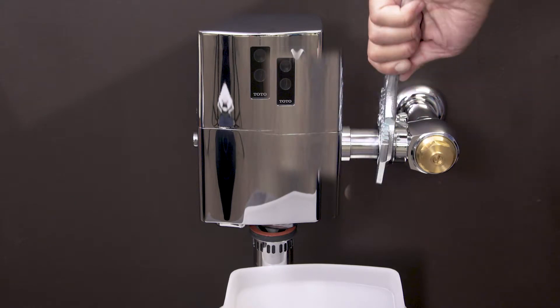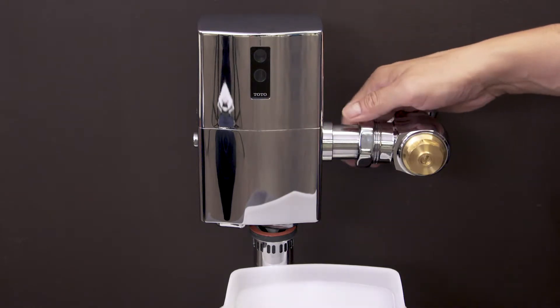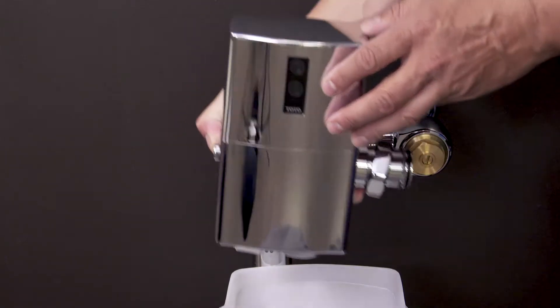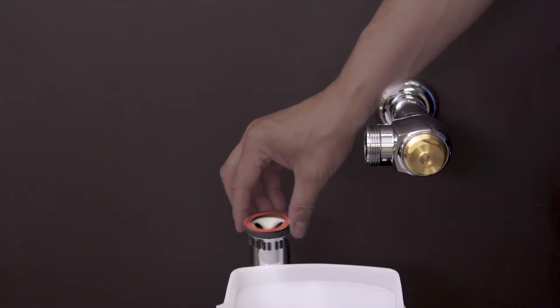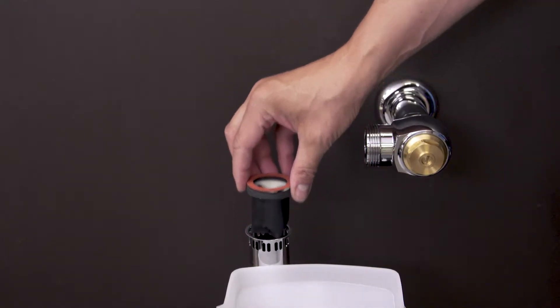Now loosen the tail piece coupling. Remove the flushometer body and let any water drain into the bucket. Now remove and discard the old vacuum breaker.